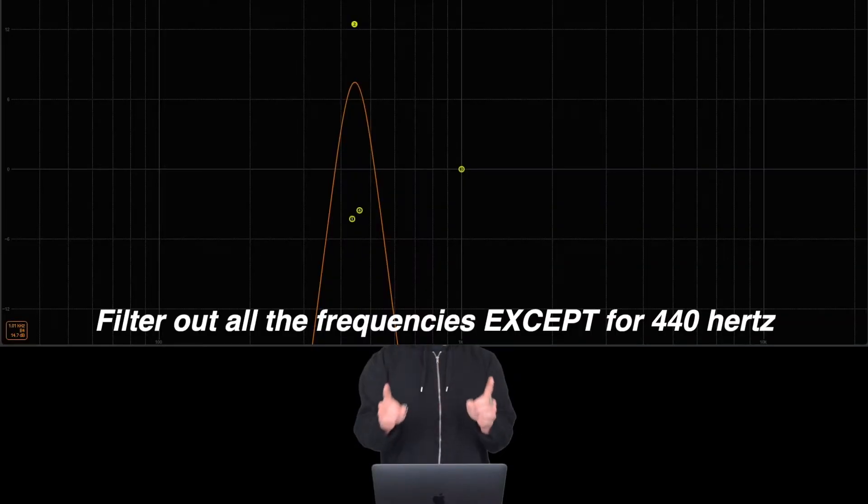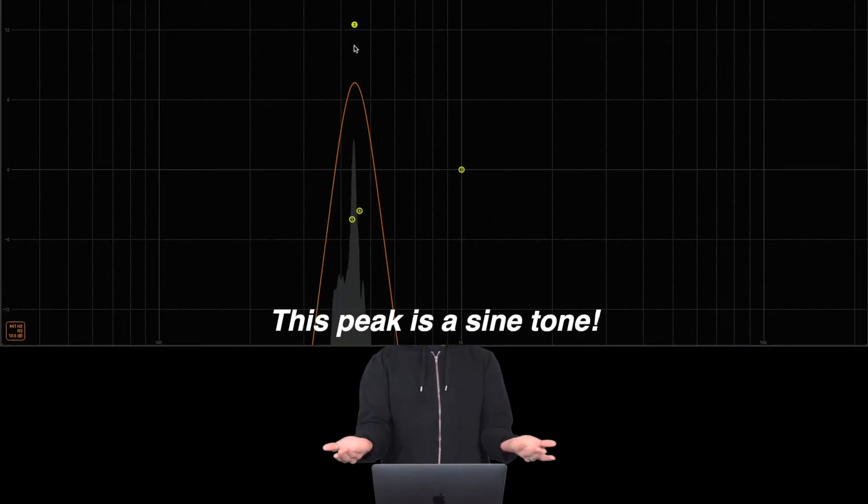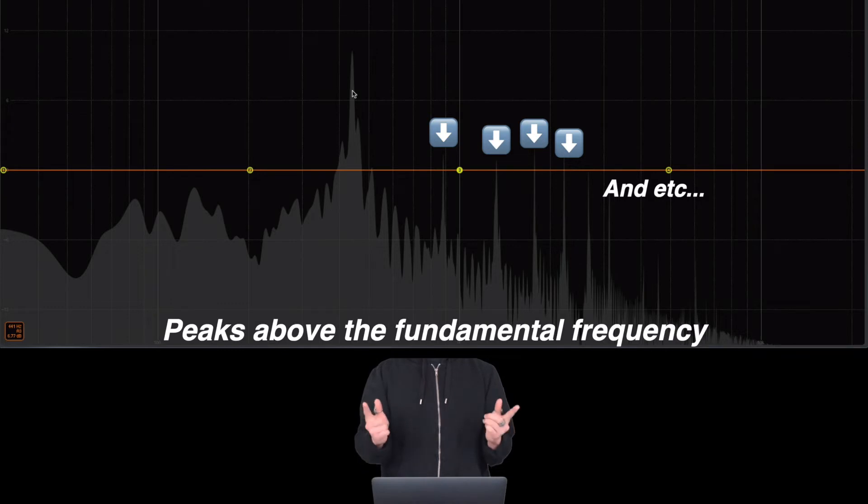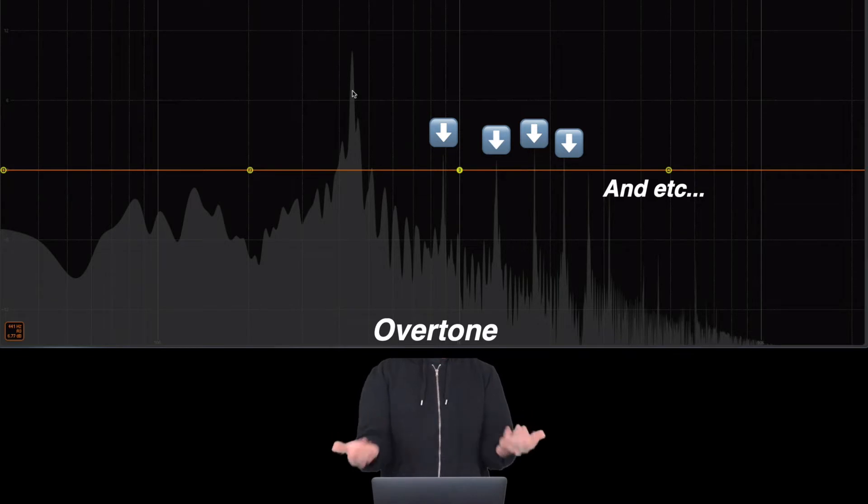Let us filter this sound so that all the frequency contents other than 440 hertz are filtered out and gone. And we roughly got ourselves a sine tone. Well, what about the other peaks? These frequencies that are greater than the fundamental frequency of a sound is called an overtone.